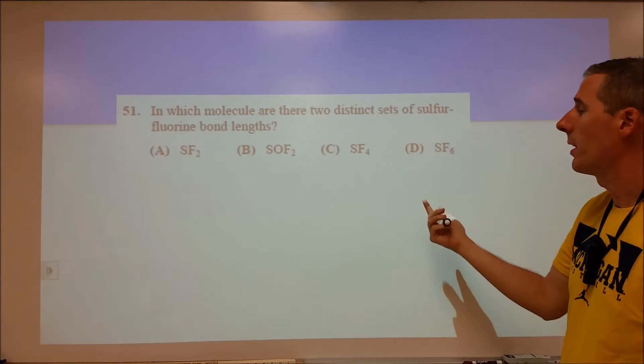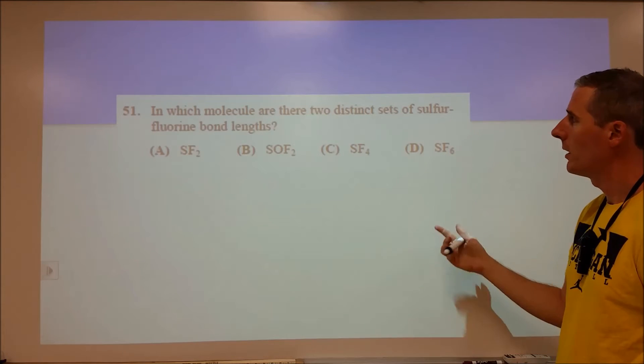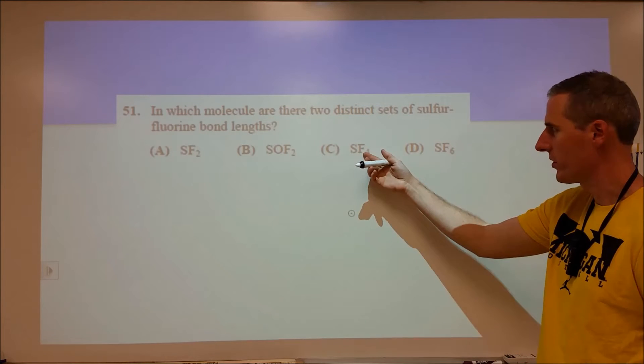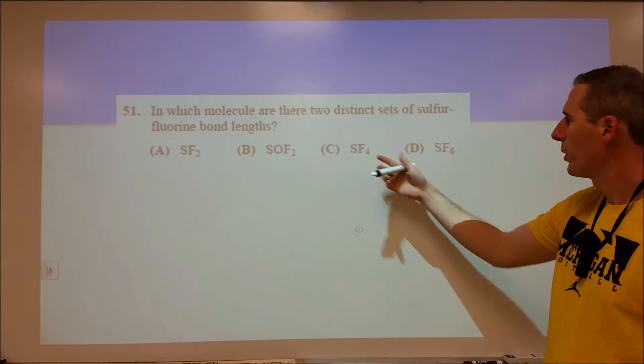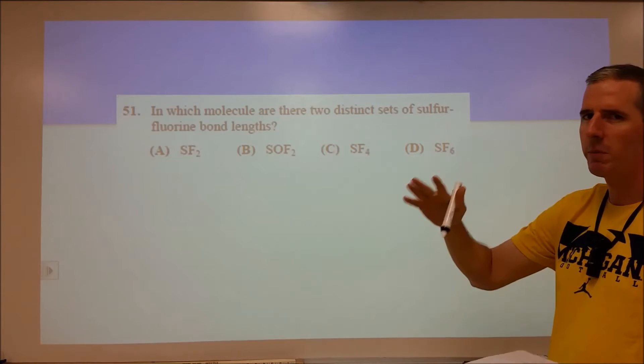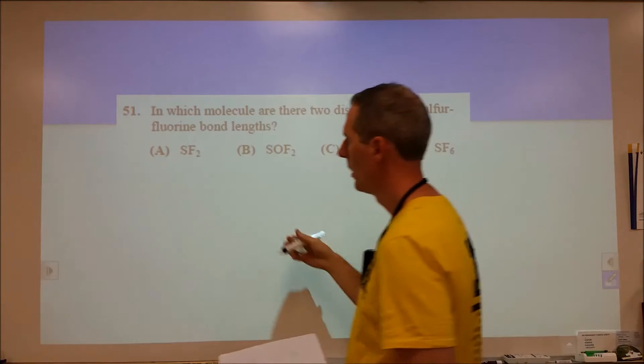Our final 10 questions of the test here. We're starting off with 51. Two distinct sets of sulfur fluorine bond lengths. When I read this question I immediately went to C because I know it's trigonal pyramidal or seesaw, but trigonal pyramidal in electronic geometry, and that to me was probably going to be the different bond lengths.